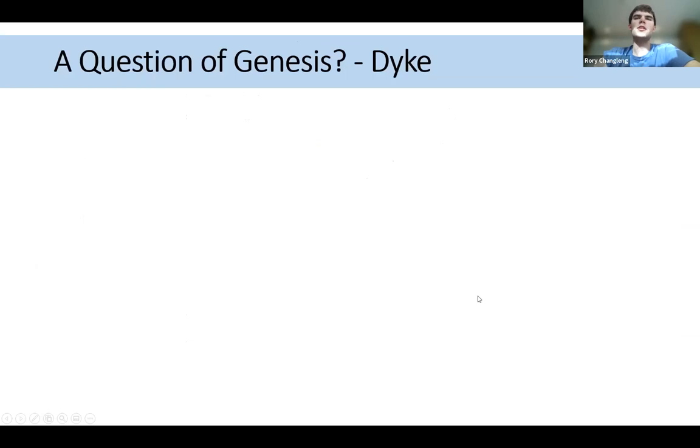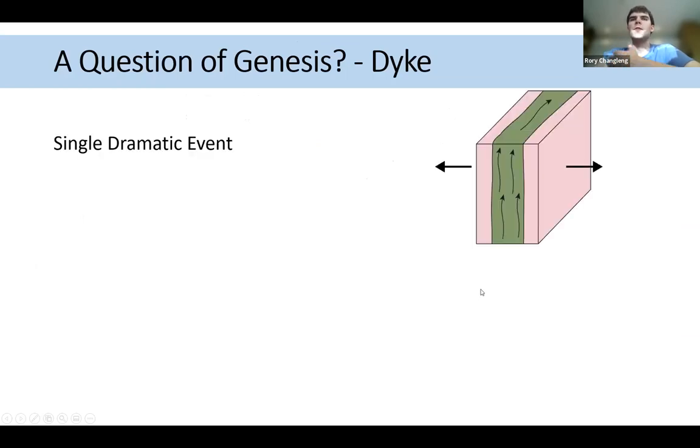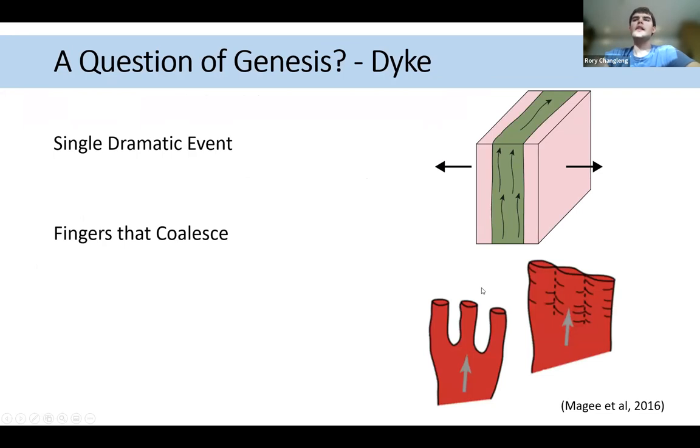So the questions really are how did this dike first of all emplace: was it a single dramatic event or was it more of a magma finger coalescence idea, which is increasingly popular in literature?